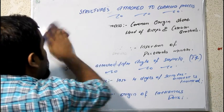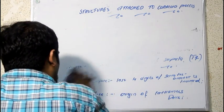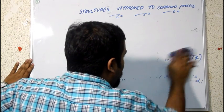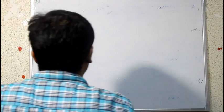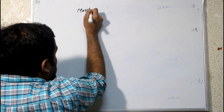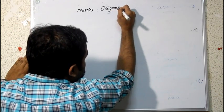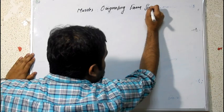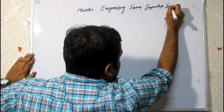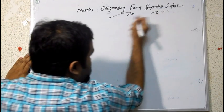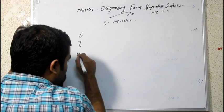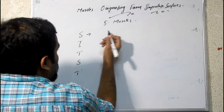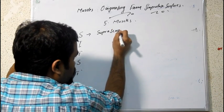Now we will move to the muscles — the muscles originating from the scapula surface. Mainly we have five muscles originating from the scapula surface. The first one is suprascapularis — you remember the scapula, right — suprascapularis.